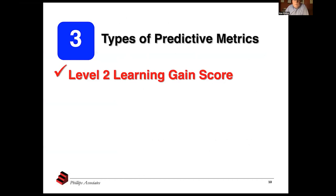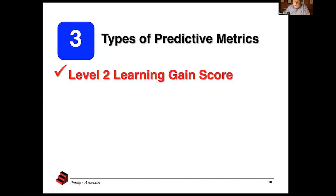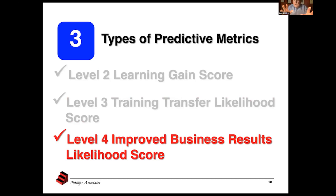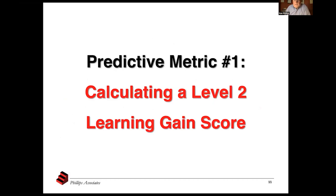The data collected begins to answer the question both business executives and L&D professionals want answered: is this program delivering value? There are three types of predictive metrics we'll focus on: Level 2 learning gain score, Level 3 training transfer likelihood score, and Level 4 improved business results likelihood score. I'll show you the questions to use, then how to do the math for each one. You'll get the slides, so just focus on understanding the concepts now.